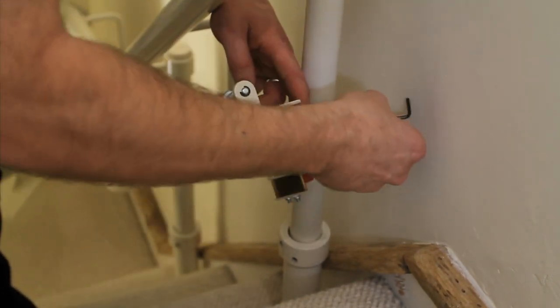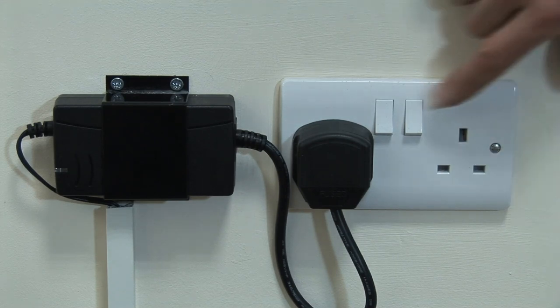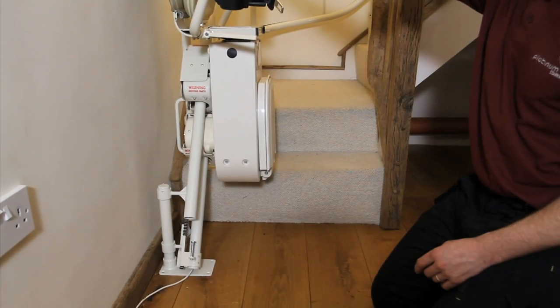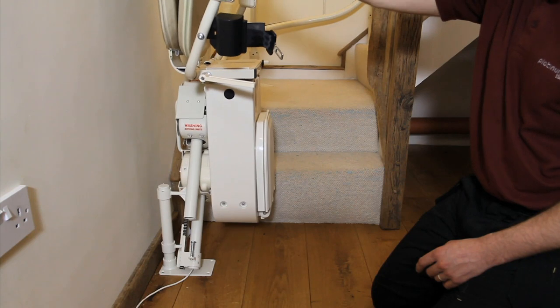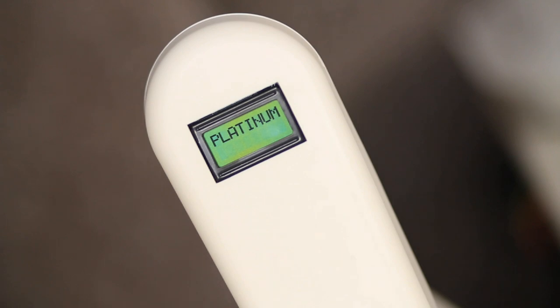When you are happy with all the wiring connections that have been made, simply turn on the power supply and check that the carriage charges correctly, both at the top and bottom charging points. When the stairlift is ON charge, the display will read PLATINUM.